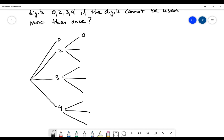There could be three options from each branch. The next digit could be 0, 3, or 4 here. It could be 0, 2, or 4 here. It could be 0, 2, or 3 here.